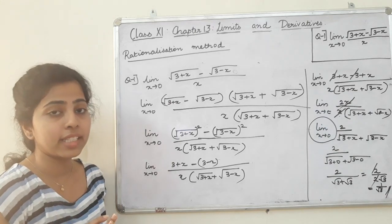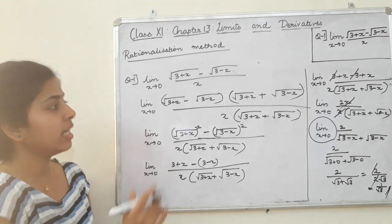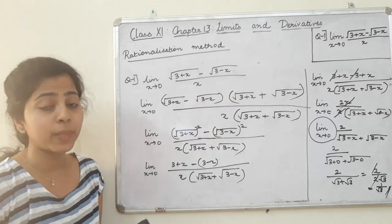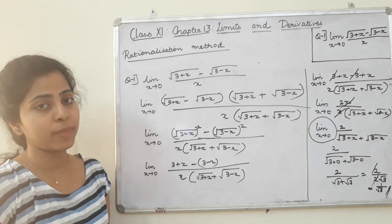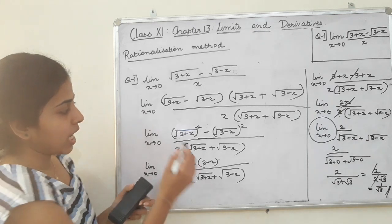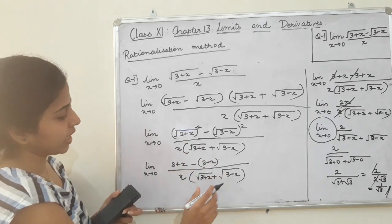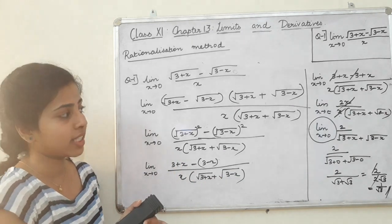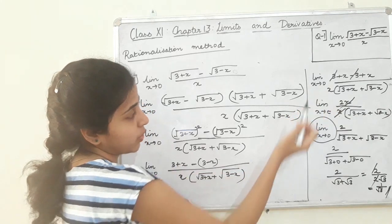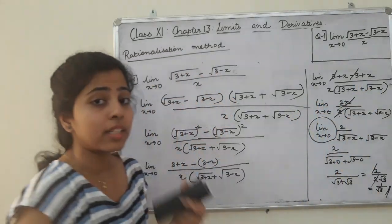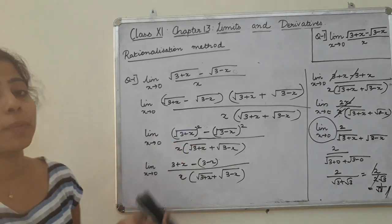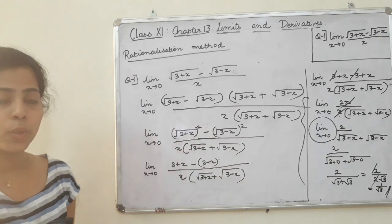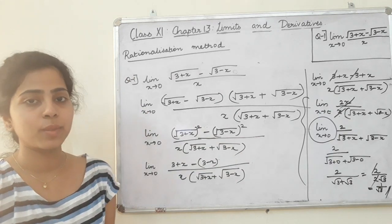We have done the rationalization. We formulate A minus B into A plus B, which is A squared minus B squared. That is how we solve it — the denominator becomes 0 and we cancel. We will see some more problems in class. Thank you.